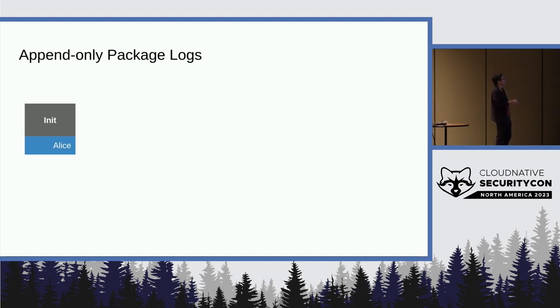They all begin with an initial record, and that record says who the original owner of that package is. And if a registry accepts this record, that means that it's saying that you now own this new package. Every subsequent record contains the hash of the one before it. That's what that right-to-left arrow is.